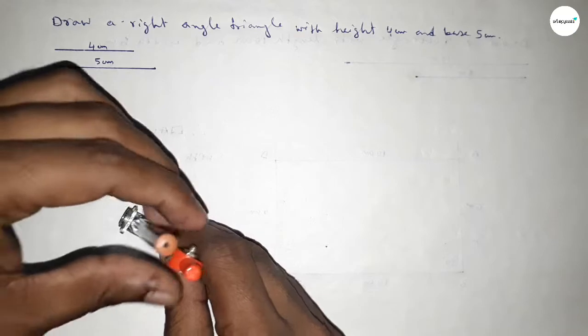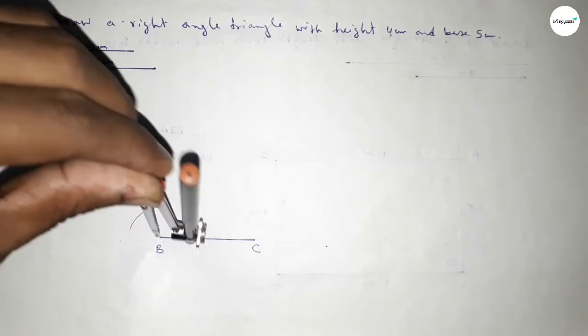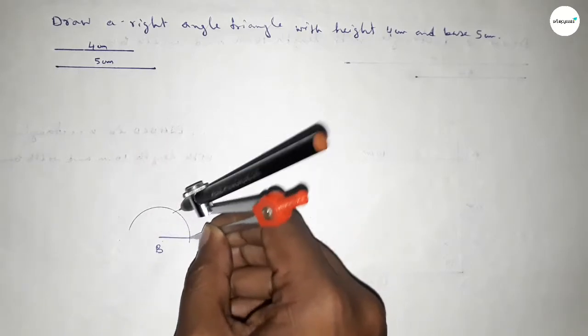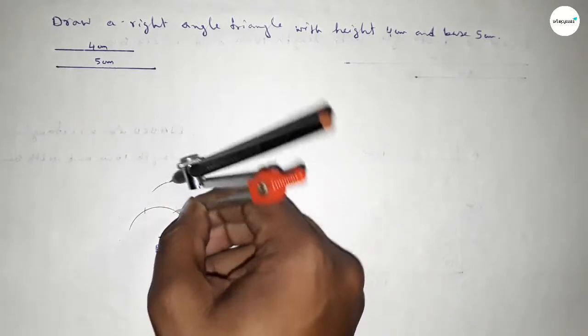Putting the compass on point B and drawing an arc by this way, and with the same length, putting the compass here and cut here, and bringing the compass here, cut here, and drawing an arc here again.